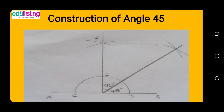Remember, 90 degrees is not what we require — we require angle 45 degrees, so we are going to bisect this angle. Bring the pin of your compass to point E and draw the first arc, then remove it and bring it to D to draw the second arc. The intersection of these two arcs is where you rule a diagonal line. When that diagonal line meets the 90 degree angle, it divides it, giving you 45 degrees and 45 degrees.